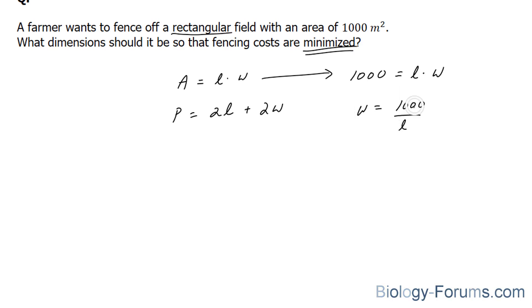Next, I'll take this and replace it with a W found in this equation. So P is equal to 2 times L plus 2 times 1,000 over L.